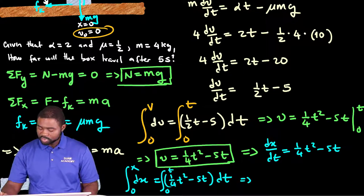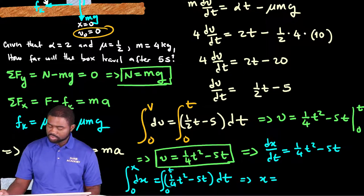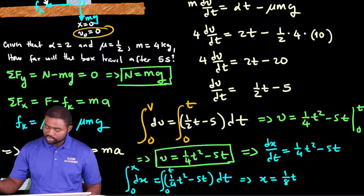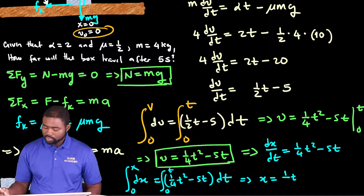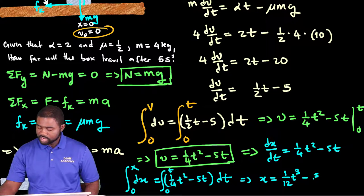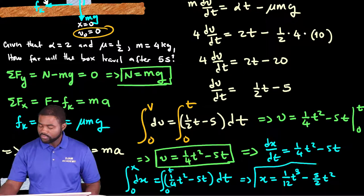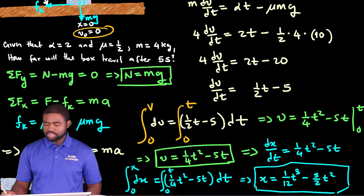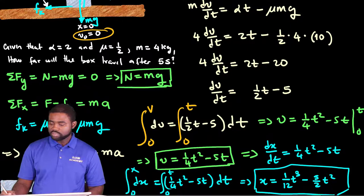If we take the integrals of both sides, we are integrating from 0 to x, from 0 to T, we will have x equal to 1 over 12 T cubed minus 5 over 2 T squared. This is the expression for the position of the box.